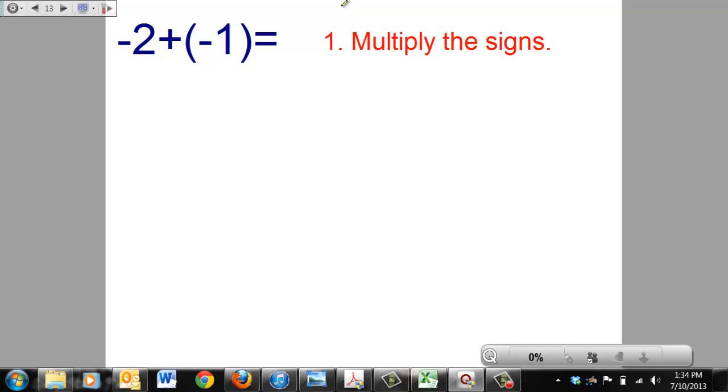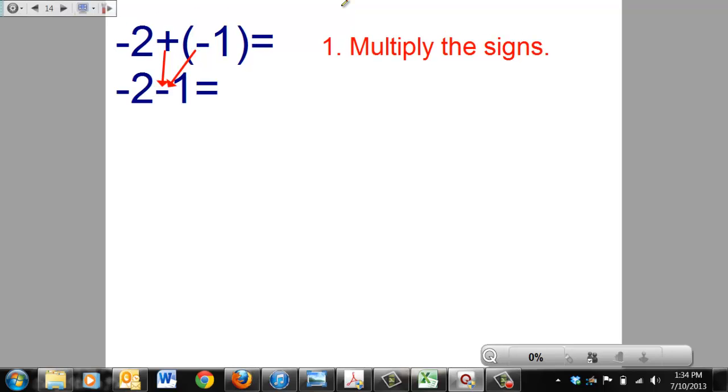Here you've got a positive directly beside a negative. There's some parentheses between them but they're still sign sign, with no numbers separating them. Whenever you see that situation you're going to do step 1, which says to take and multiply the signs. And what did we learn a positive times a negative was yesterday? Positive times a negative is a negative. So those two signs came together to give you a negative.